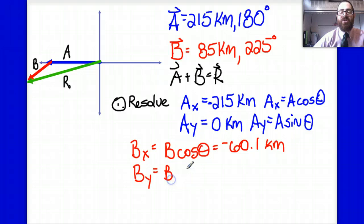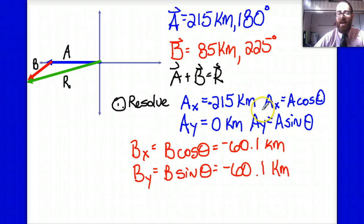Likewise, the y component can be found by multiplying B times the sine of the angle theta. And even before I plug that into my calculator, I should recognize that it's going to be negative. Since this is ultimately 45 degrees down and to the left, I should see that the y and the x components will have the same magnitudes, 60.1. So I have magnitudes for AX and AY and BX and BY, which leads me to part two of the problem.